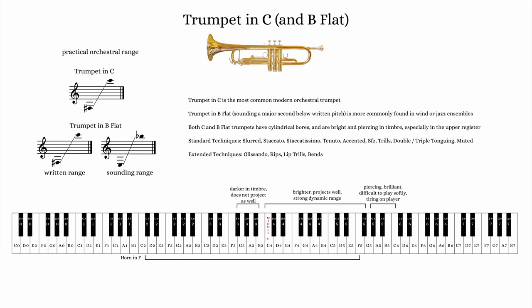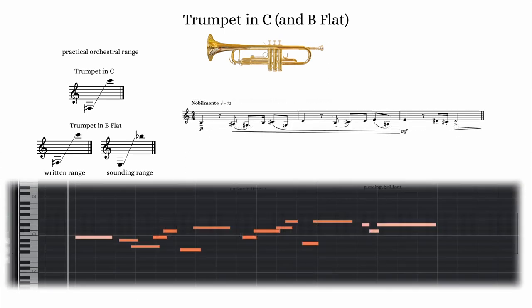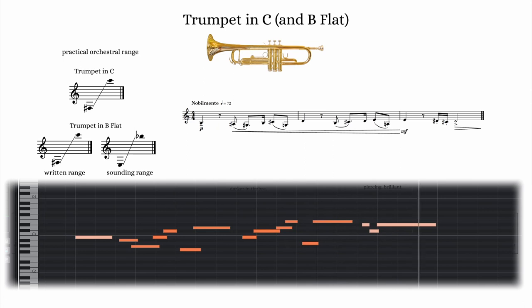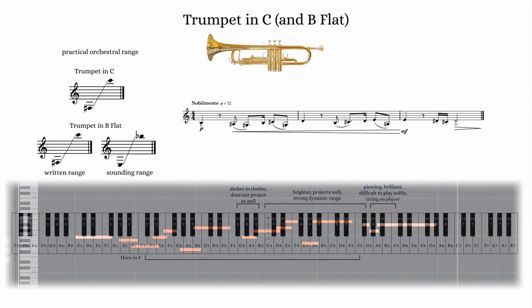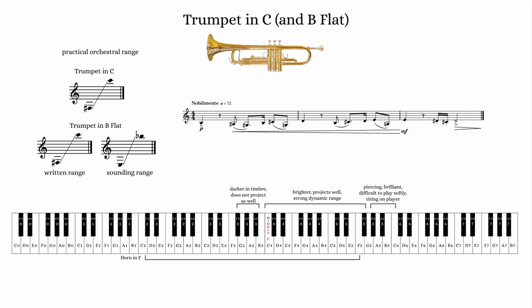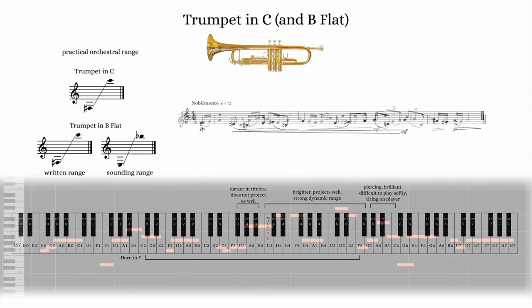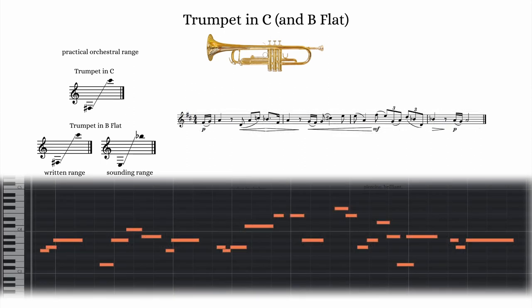Both the C and B-flat trumpets have three distinct timbral registers. The lowest register, from written F-sharp 3 to C4, sounds dark and less focused. Notes below the A are less common and harder to produce with complete control. Notes within the treble clef staff are more clear and have a brighter timbre. This is where the bulk of orchestral writing lies, as the player won't tire as easily in this range, and the instrument is capable of a wide dynamic range here.